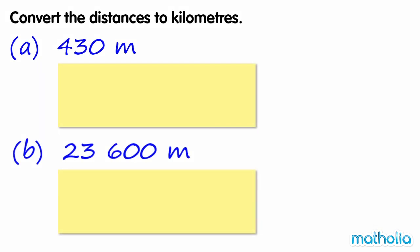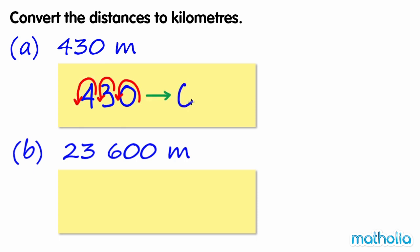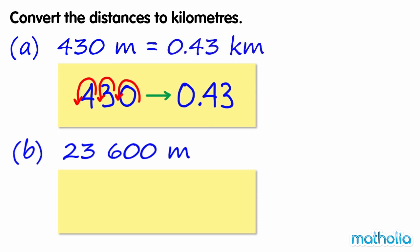Convert the distances to kilometres. 430 metres. Although not shown, we know that the decimal point lies after the ones place. Shifting the decimal point of 430 three places to the left gives 0.43. So 430 metres equals 0.43 kilometres.